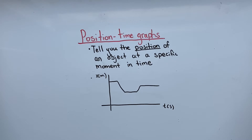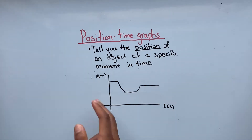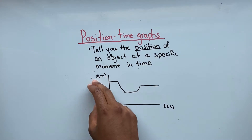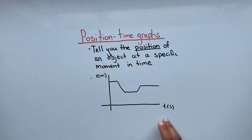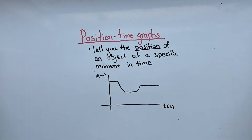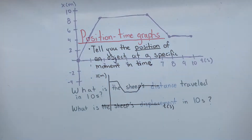Position-time graphs help us solve problems regarding an object's distance traveled and displacement. We denote position with x, and we usually measure our time in seconds. Now let's get into an example.